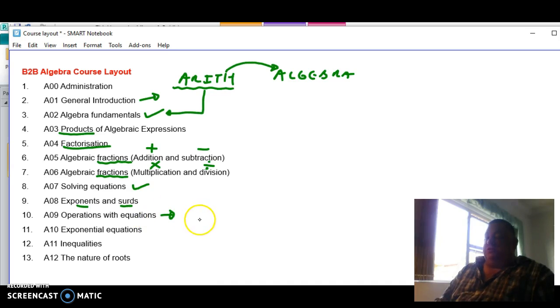Here we look at simultaneous solutions, things like that. And then we look at exponential equations. Exponential equations is where the unknown is the exponent. How do we solve those type of equations?